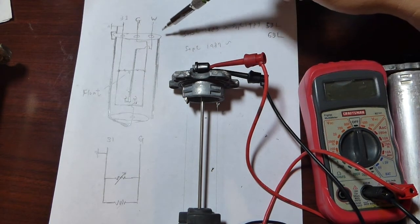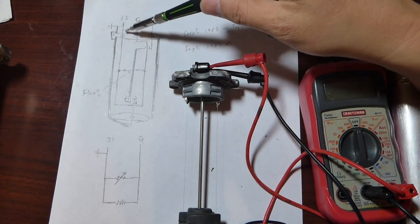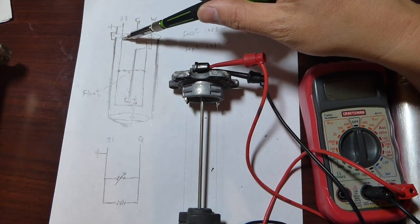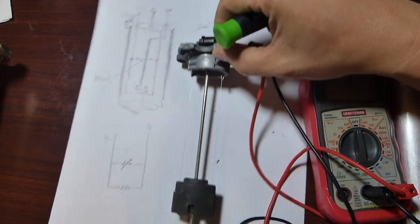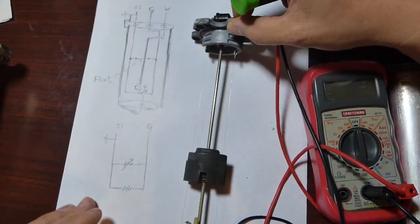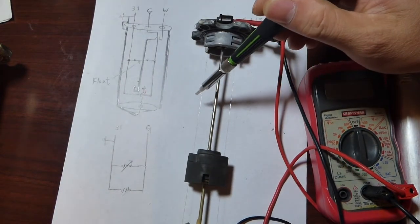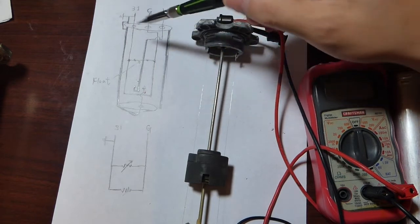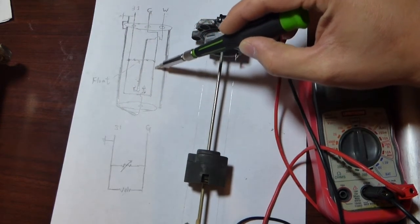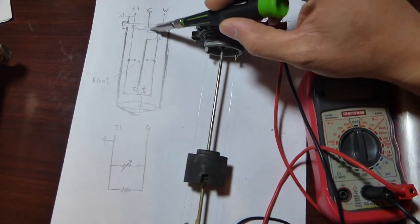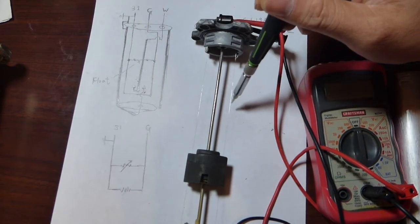Inside the fuel level sending unit, terminal 31 actually connects to a thin piece of metal wire. Over here is that wire. I hope you can see that. The wire goes around back to terminal G. That's the other side of the wire.